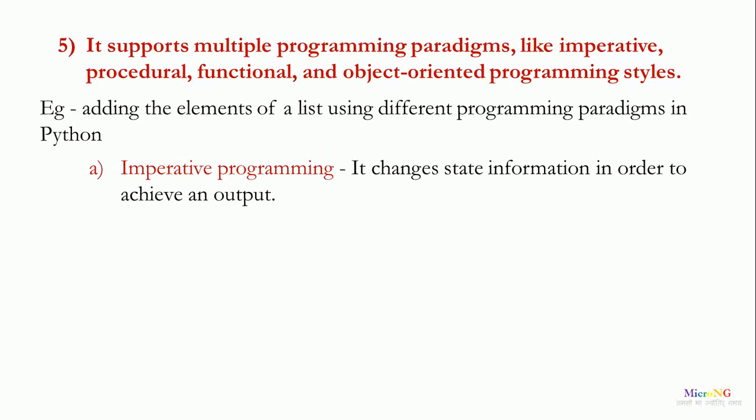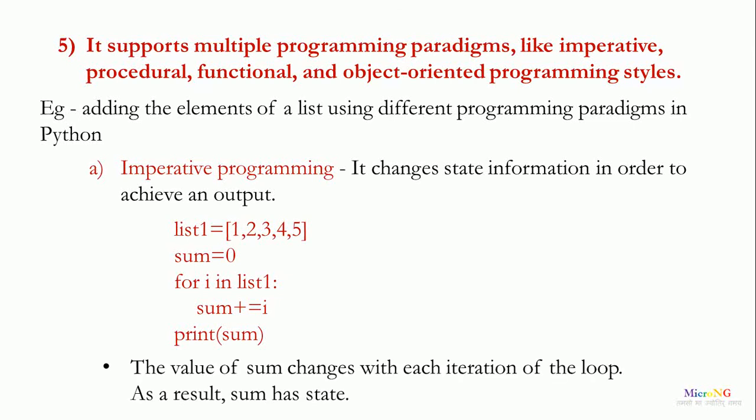First, imperative programming. It changes the state informations in order to achieve an output. Let's see the example in which we have created a list with five elements. We use a variable sum for storing the sum and a for loop is used in which each element will be taken from the list and it will keep on getting added into the variable sum and the sum is printed.